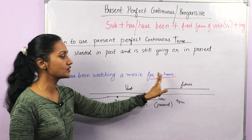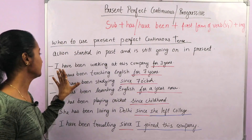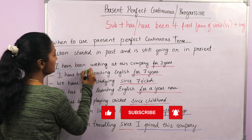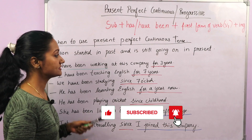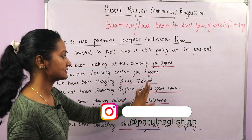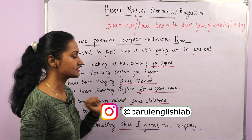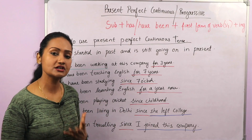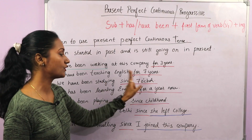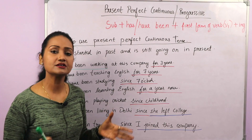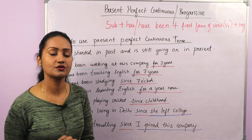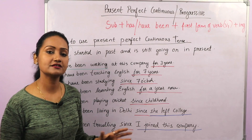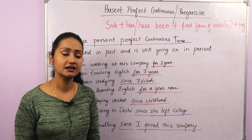Let's have some more examples. 'I have been working at this company for three years.' Here 'I' is the subject and 'have been working' is the verb tense. Notice that across these sentences we see 'for' or 'since' because in this tense we talk about duration. We use 'for' for a period of time and 'since' for a specific point of time in the past. When we know the exact time, year, or month, we use 'since'; otherwise, for a period like three years or four months, we use 'for'.